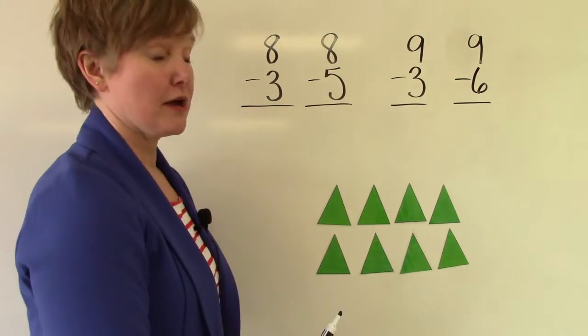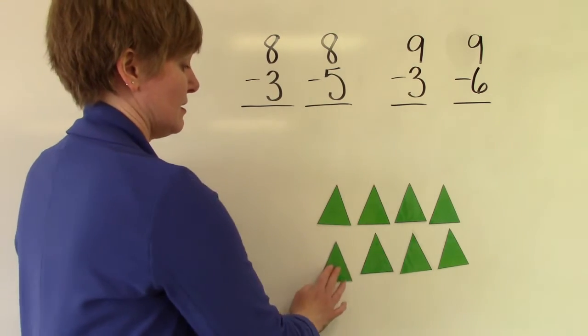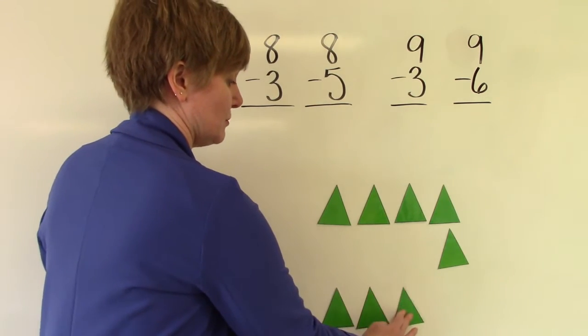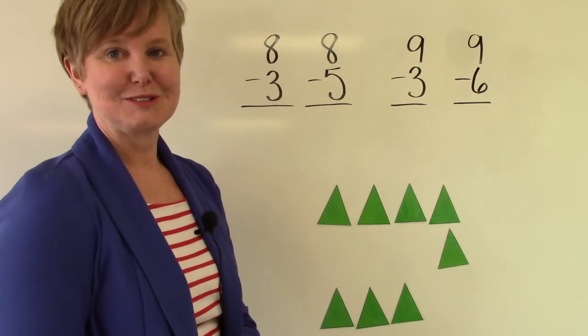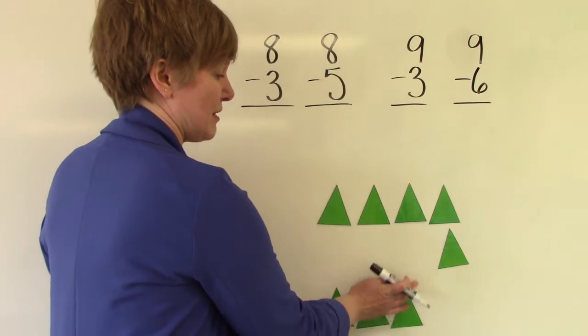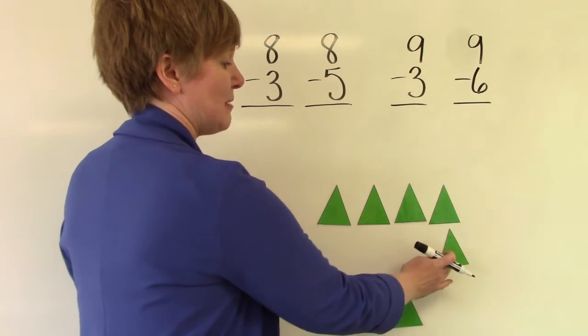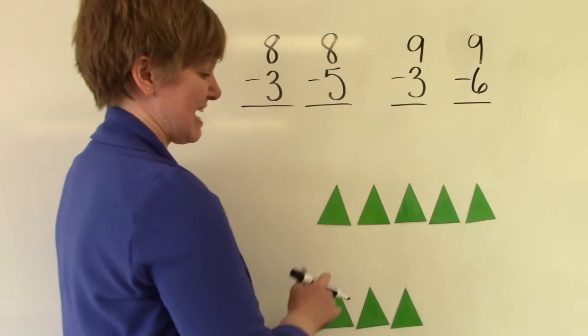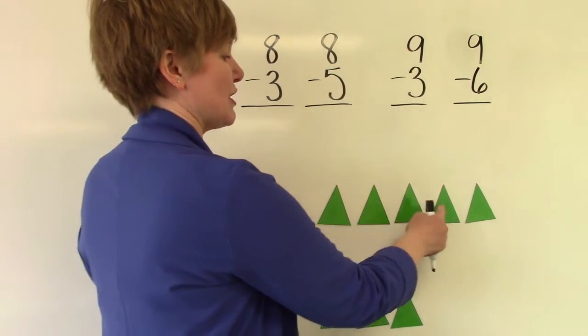Well, we're going to take away three from the eight. One, two, three. If we take away three from our eight, how many are left? Let's count them. One, two, three, four, five.